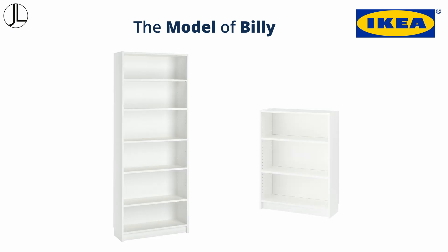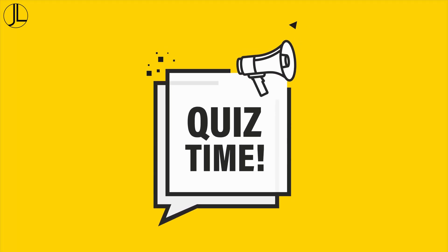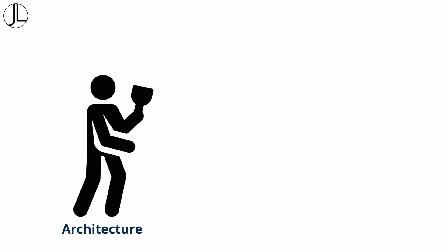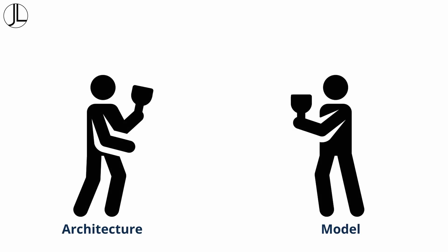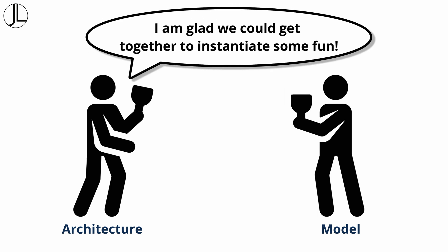The model of our IKEA product, which is an implementation of the Billy schematic — by looking at it, you understand how it works. Let's do a quiz to test your understanding so far. Architecture and model walked into a bar. After the first drink, architecture says to model, 'I'm glad we could get together and instantiate some fun.'